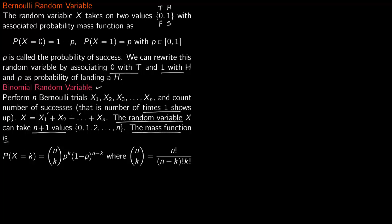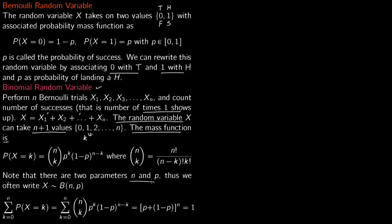The probability mass function is: probability x equals k, where k is any value from 0 to n, equals n choose k times p to the power k times (1 minus p) to the power (n minus k). Here n choose k is the combinatorial symbol n factorial over (n minus k) factorial times k factorial. There are two parameters: n is the number of trials and p is the probability of success. We write x distributed as B(n, p).